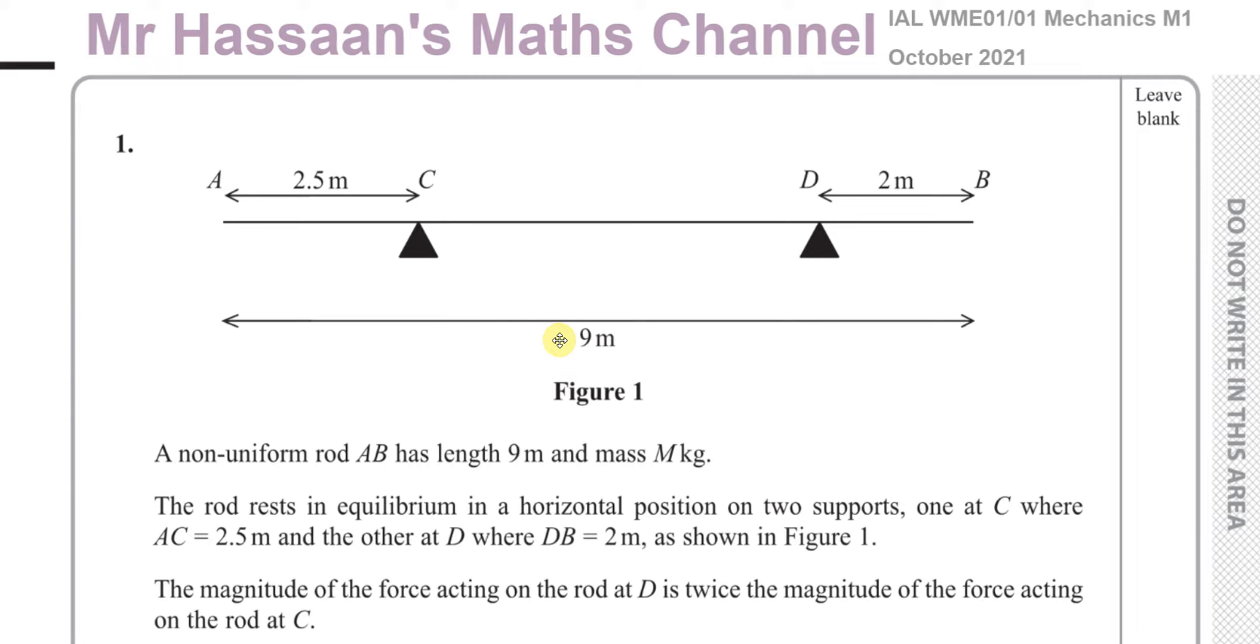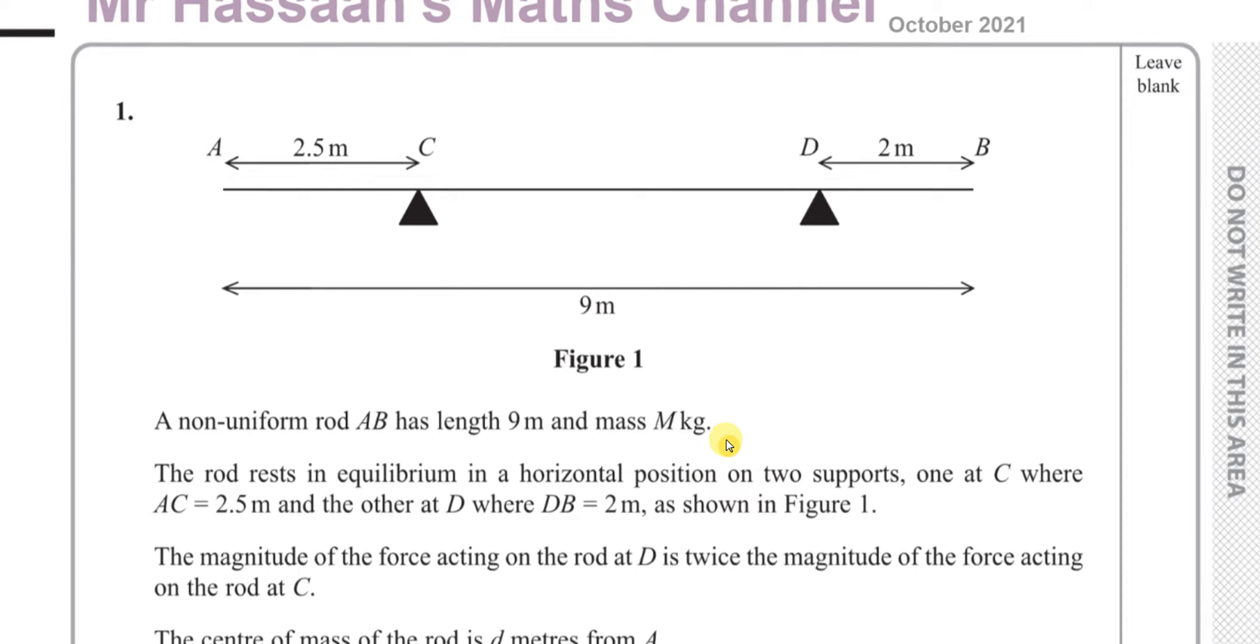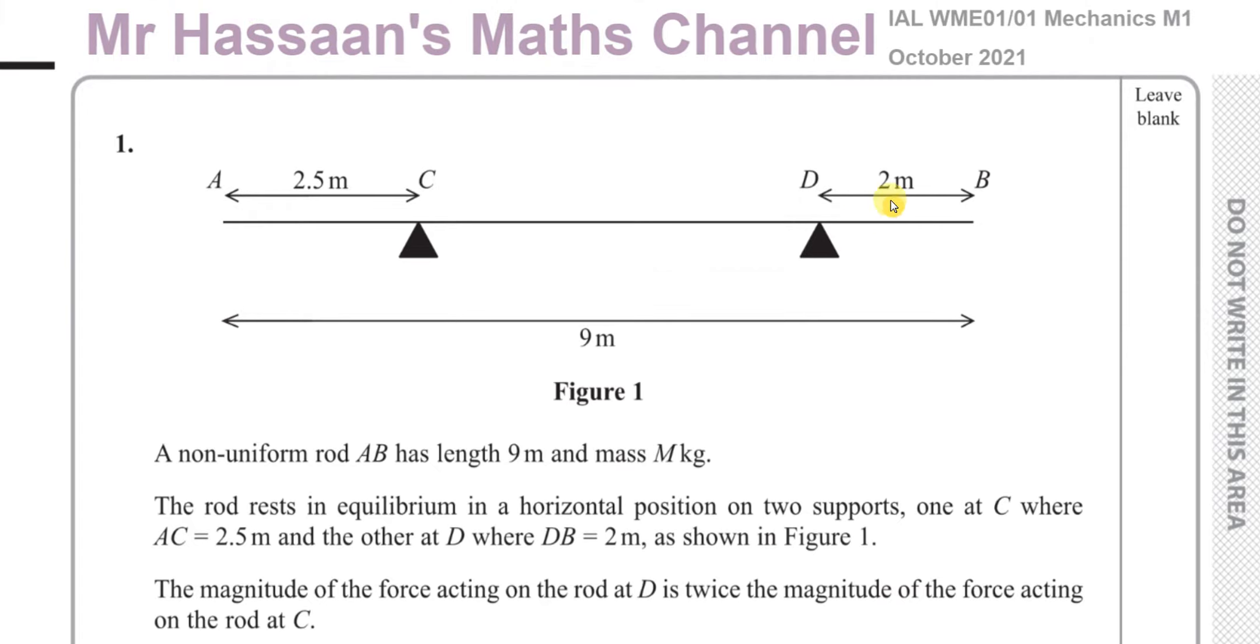Question number 1 is about a non-uniform rod which has a length of 9 meters as shown in the diagram and a mass M kilograms. We don't know the mass. The rod rests in equilibrium in a horizontal position on two supports, one at C where AC is 2.5 meters and the other at D where DB is 2 meters. The magnitude of the force acting on the rod at D is twice the magnitude of the force acting on the rod at C.